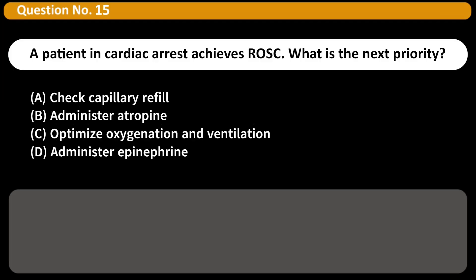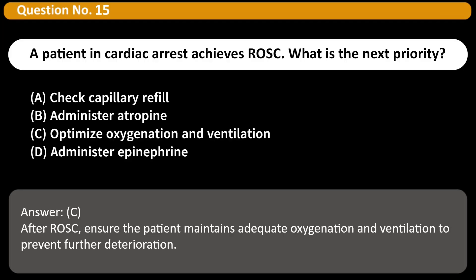A patient in cardiac arrest achieves ROSC. What is the next priority? A. Check capillary refill. B. Administer atropine. C. Optimize oxygenation and ventilation. D. Administer epinephrine. Answer: C. After ROSC, ensure the patient maintains adequate oxygenation and ventilation to prevent further deterioration.